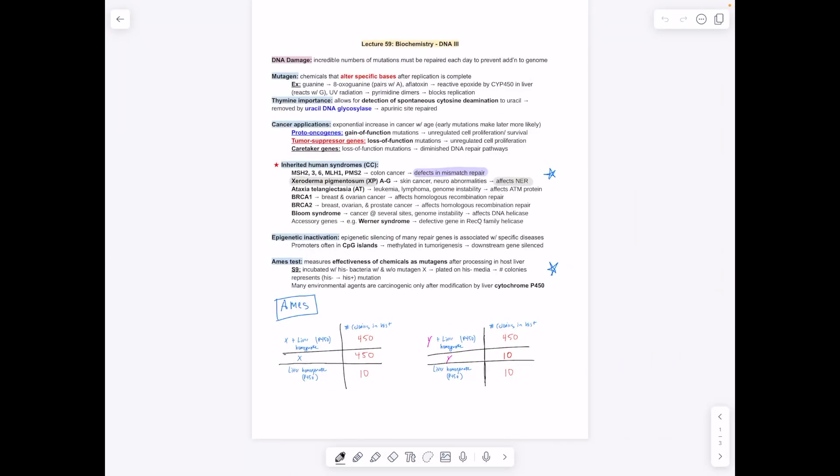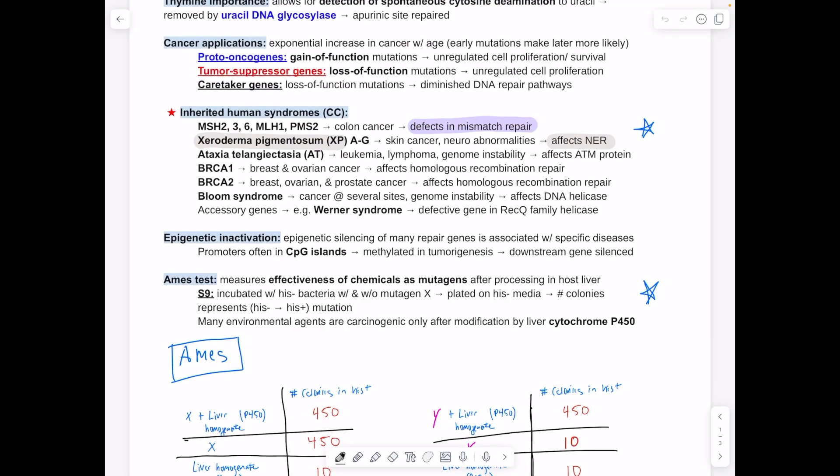Then we have DNA damage. There is a video that I made on the repair mechanisms, but it's important to know some of the human syndromes as well. We have MSH2, MSH6, MLH1, PMS2—defects in the repair pathway which results in colon cancer. These are the MutS and MutL of the mismatch repair mechanism, which detects abnormal shape in double-stranded DNA. If you don't have enough of these, then colon cancer is the most common outcome.